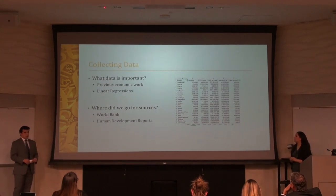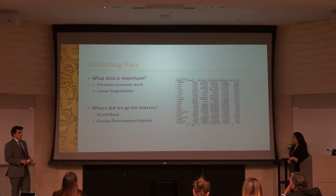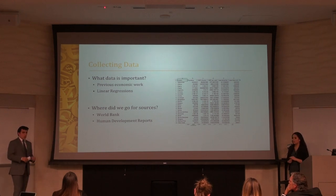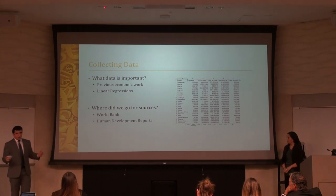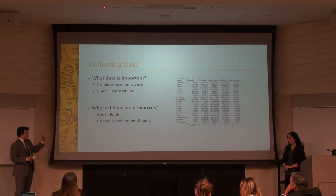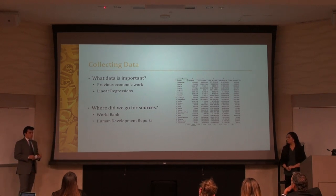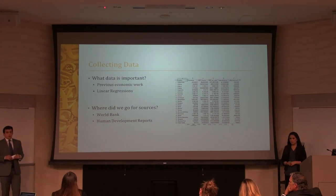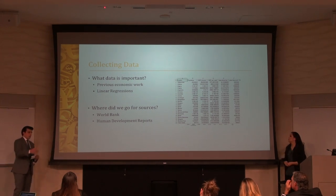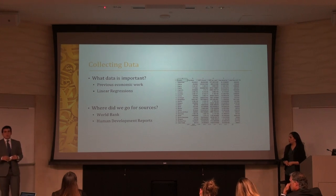The first step was collecting the data for the project. We needed a large amount of different economic indicators — things that could tell us why certain countries have higher GDP than others. There are hundreds of thousands of indicators available. We chose to use the World Bank and the Human Development Reports, selecting indicators based on Dr. Steens' report or suggestions from Dr. Fonby in the Economics Department.